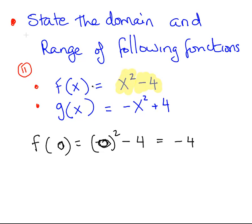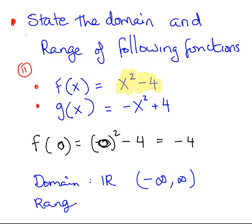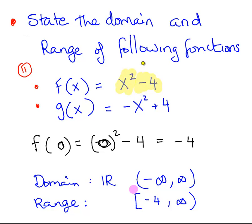There is no constraint on what types of inputs we can put in, but the outputs will be constrained to minus 4 to infinity. The domain is the set of all real numbers — minus infinity to infinity. But for f, the range is a little bit different: it can go as low as minus 4 inclusive, but no lower, and it has no upper bound — it can go up to infinity. The square bracket beside minus 4 means that minus 4 is inclusive, so we can include minus 4 in that set.